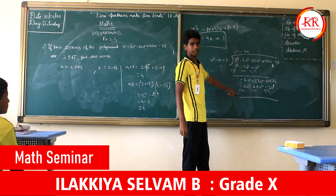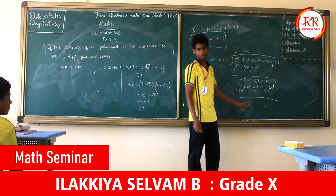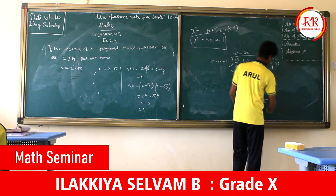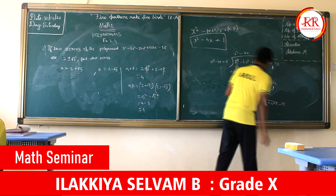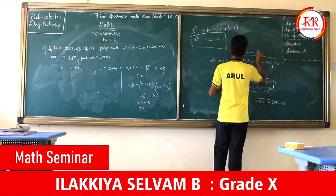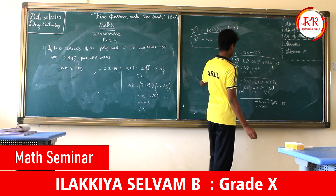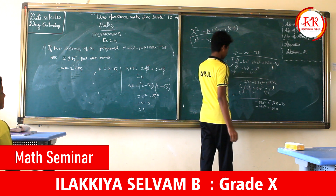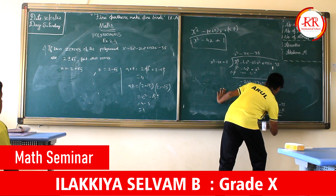Minus 2x³ and plus 2x³ cancel. Minus 27x² minus 8x² gives minus 35x². Then 138x plus 2x gives 140x, and we bring down minus 35. We multiply x² by minus 35 to get minus 35x². Minus 35 into minus 4x gives plus 140x, and minus 35 into 1 gives minus 35. Changing signs, the remainder is 0.